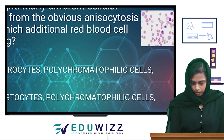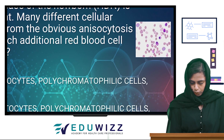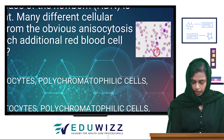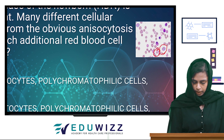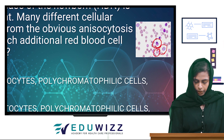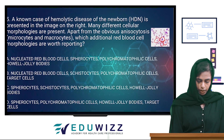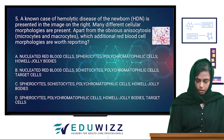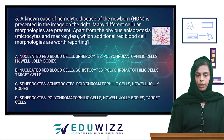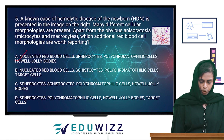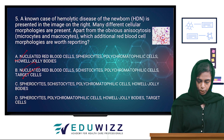Looking at the figure, we can identify Howell-Jolly bodies, polychromatophilic cells, and NRBC cells. The options include Howell-Jolly bodies — option one has Howell-Jolly bodies, option two does not, option three has Howell-Jolly bodies, and option four has Howell-Jolly bodies.